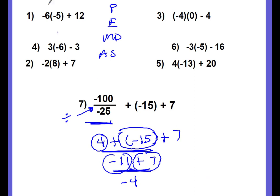A lot of you are going to want to add the 4 and the 7 together because they're both positive — and you'd get a positive 11, then add it to the negative 15 and still get negative 4 — but that doesn't always work, so you have to be super careful. Go in order, left to right, like you're reading a book. Good job, Bobcats.